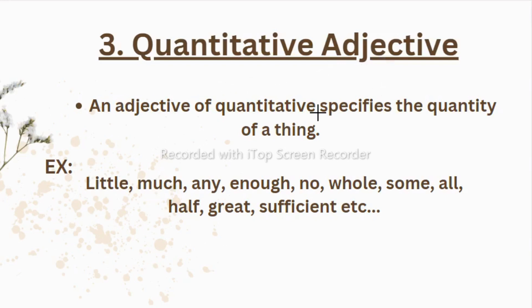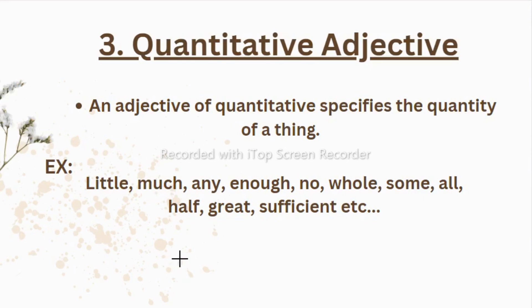The next type is quantitative adjective. This adjective specifies the quantity of a thing. For example: little, much, any, enough, no, whole, some, all — these terms show the quantity of a thing, like two apples, three apples, or two pens. Notice that 99% of numbers in math always come with nouns — like I have four books, do you have four thousand rupees, I need five hundred dollars. 'Rupee' is a noun, and 'four' showing its quantity is the quantitative adjective.